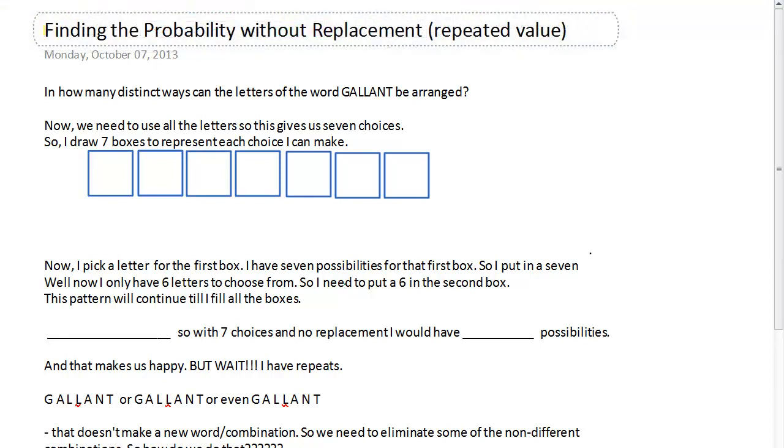Okay, so today we're talking about finding the probability without replacement. I'm going to use up each element, and after I finish doing that, we're going to talk about how do I take care of a repeated value. And so what we're going to do is ask the question,